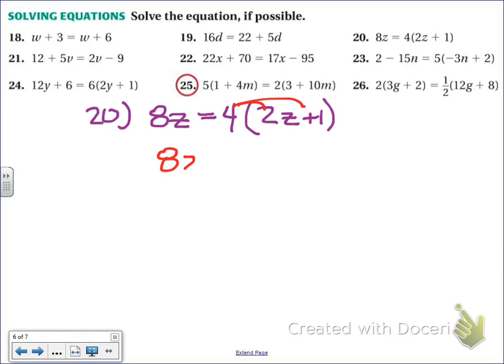So I'm going to have 8z equals 4 times 2z is 8z, and 4 times 1 equals 4. So I always like moving, well, first I have to combine like terms. I have 8z and 8z. They're on different sides of the equal sign, so that means I need to do the opposite when I move one of them.